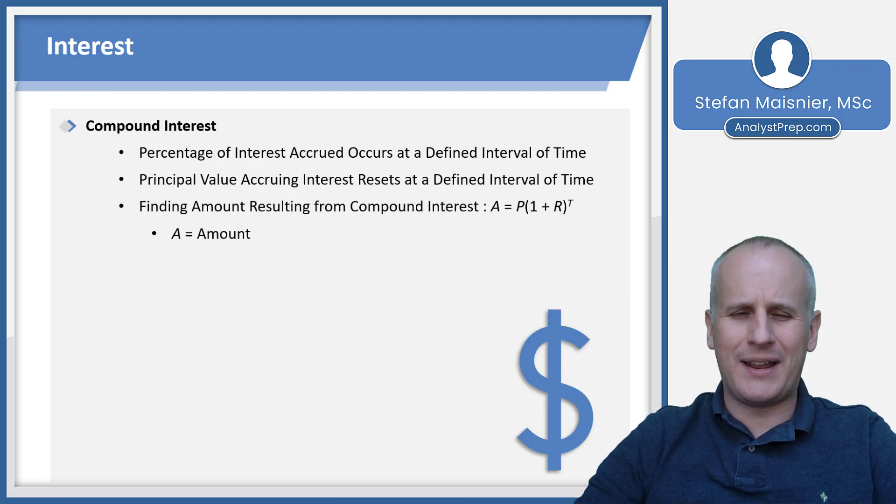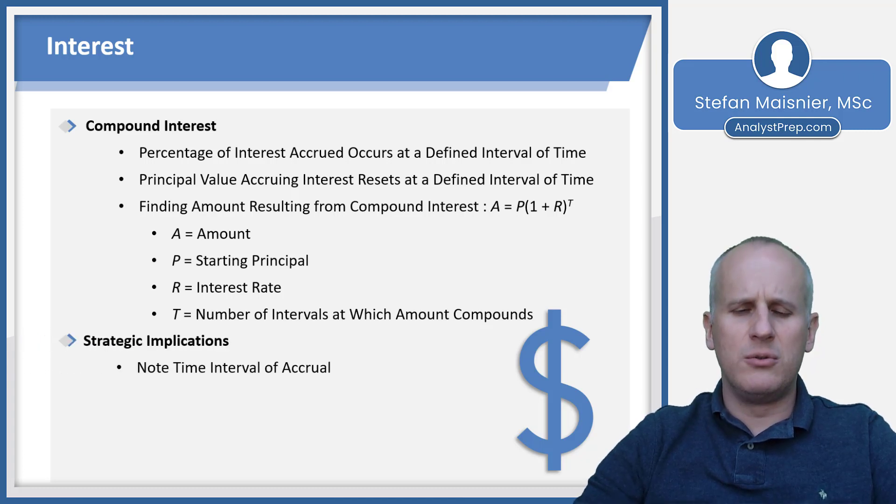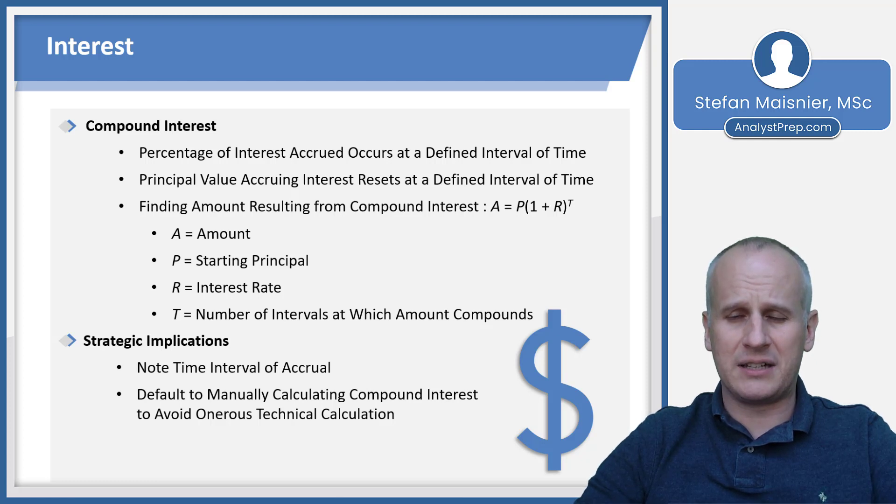A is still your amount that you end up with at the end of the interval from the compounding interest. P is once again your starting principal. The R once again is your interest rate. But T now is the number of intervals at which the amount compounds. Strategically, you do need to note the time interval of the accrual and the compounding. You can again potentially manually calculate compound interest to avoid a potentially onerous manual technical calculation, because remember, you will not have a calculator, at least on the quantitative section of the GMAT focus. And even the calculator that you get on the data insights section of the exam is probably not going to be all that intuitive to use when it comes to raising something to a power like this.